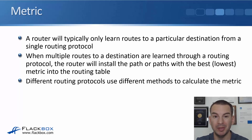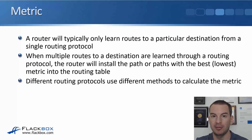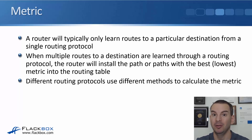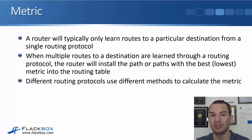A router will typically only learn routes to a particular destination from a single routing protocol. It's not normal for an organization to be running multiple different routing protocols. When multiple routes to a destination are learned through a routing protocol, the router will install the path or paths with the best — meaning the lowest — metric into the routing table. Different routing protocols use different methods to calculate that metric.